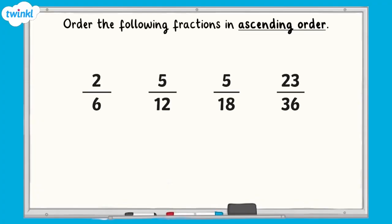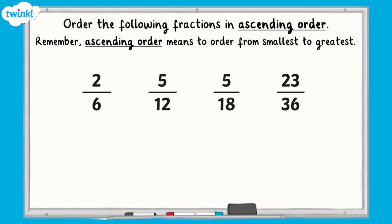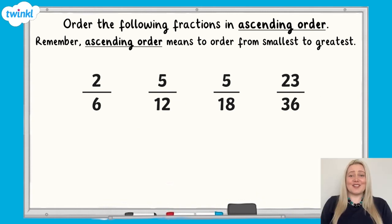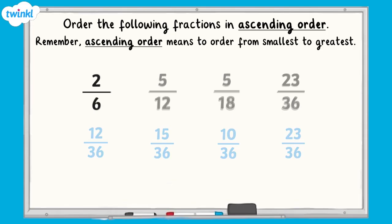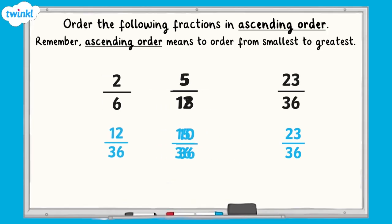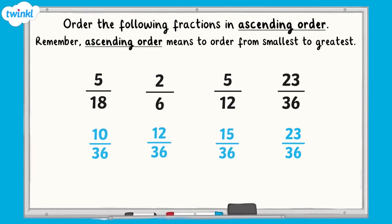For an extra challenge, you need to order the following fractions in ascending order. Remember, ascending order means to order from smallest to greatest. Pause the video here and have a go. All finished? Well done! Here are the answers. You could have used 36 as a common denominator. So we can now use the numerator to order the fractions in ascending order. 5 18ths is the smallest, then it's 2 sixths, followed by 5 12ths, and finally 23 36ths is the greatest.